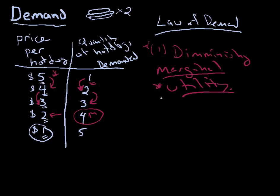There are other reasons why, when the price goes down, you buy more. Here's another one — it's called the income effect. As the price goes down, you have more income available, so you buy more hot dogs. As the price goes up, you have less income available, so you buy fewer hot dogs.